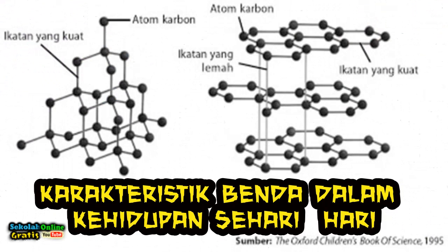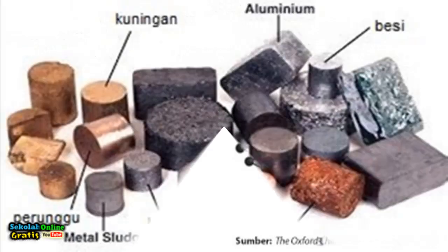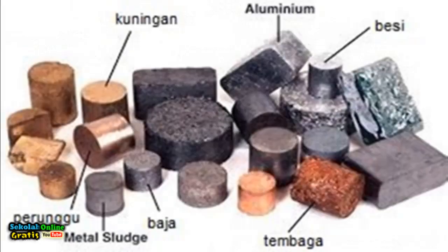Characteristics of objects in daily life. A material composed of the same atoms but a different structure or arrangement than the material has different characteristics or properties such as diamond, graphite, plastic, steel, iron, galvalume, bronze and brass.